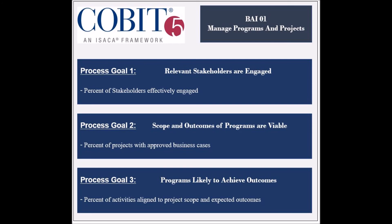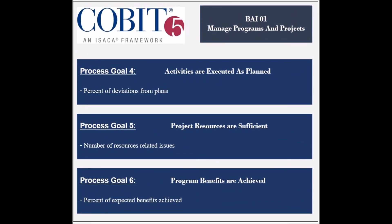The third goal is to ensure that the IT programs are likely to achieve the expected outcomes, and its achievement is measured by the percent of project activities aligned with the scope. The fourth goal is to ensure that the project activities are executed as planned, and its achievement is measured by the percent of deviations from the plan. The fifth goal is to ensure that the project resources are sufficient, and its achievement is measured by the number of resource-related issues.